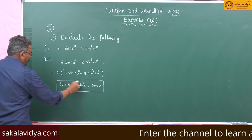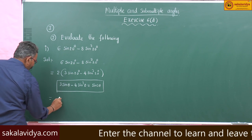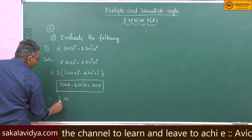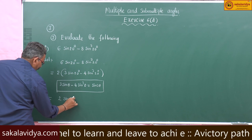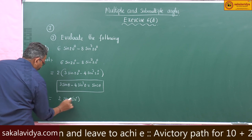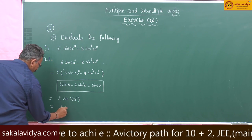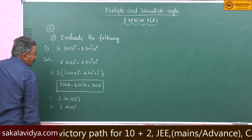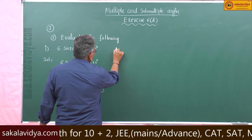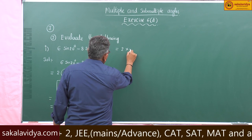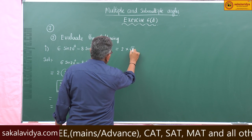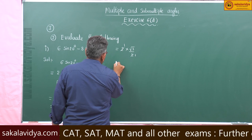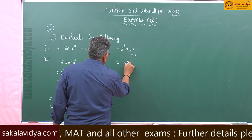This can be written as 2 sin(3 × 20 degrees), which is 2 sin 60 degrees. That equals 2 × (√3/2), which gives the answer √3.